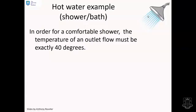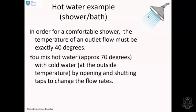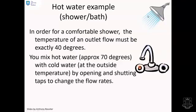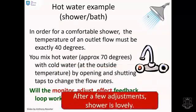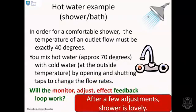Let's try this on the example of a shower or bath. In order for a comfortable shower, the temperature of an outlet flow must be around 40 degrees. We're going to mix hot water at about 70 degrees with cold water at outside temperature by opening and shutting taps to change the flow rates. The key question is, will the human method of monitor, adjust, and wait work? You've all been in a shower. You turn the hot tap and the cold tap a certain amount, then you wait a bit and try the temperature. You say, oh, it's a bit cold, let's turn it hot a bit more. You wait a bit and maybe it's a bit hot now, so you turn the hot down a bit. Basically, after just a few adjustments, the shower is lovely and we're happy. So the human methodology is working.